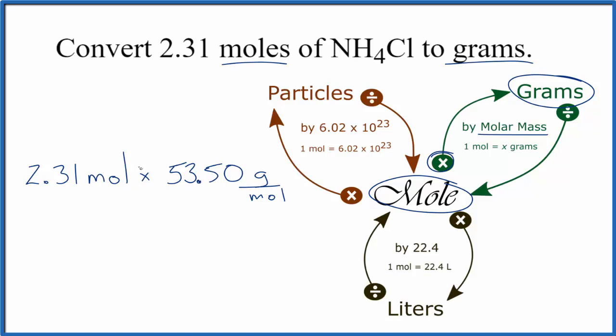So now when we multiply, we're going moles to grams, so we're multiplying by the molar mass. Moles, that's on top and on the bottom, so it cancels out. That leaves us with grams, which is what we're looking for. So we know we've done our conversion here correctly.